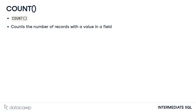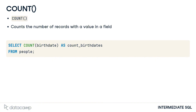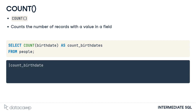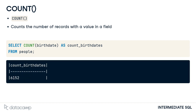To count the number of birthdates present in the people table, we will use SELECT COUNT(birthdate) FROM people. The result is 6152 birthdates.